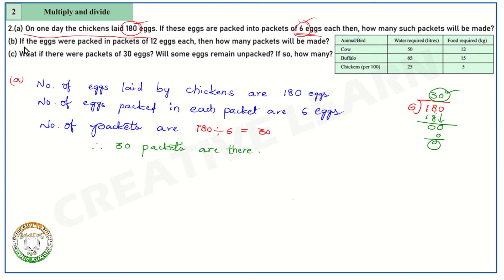Now the second part, B1: if the eggs were packed in packets of 12 eggs each, then how many packets will be made? Each packet consists of 12 eggs. Total number of eggs: 180. Again, do the division.